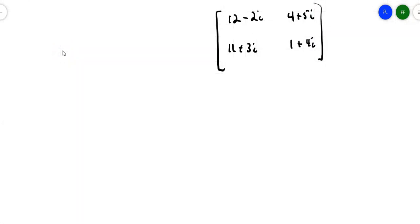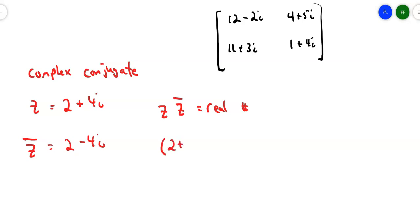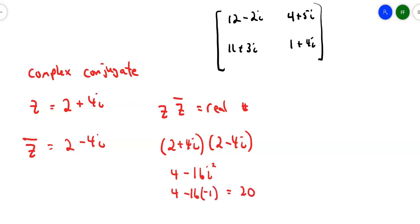There is such a thing in complex numbers as the complex conjugate. For a complex number z equals 2 plus 4i, the complex conjugate gets a bar over the top and retains the same real part but the non-real part changes sign. The idea is that a complex number multiplied by its complex conjugate gives a real number — you see a difference of squares pattern. So 2 plus 4i times 2 minus 4i: 2 times 2 is 4, negative 8i plus 8i gives 0, and negative 16i squared gives 4 plus 16, which is 20.